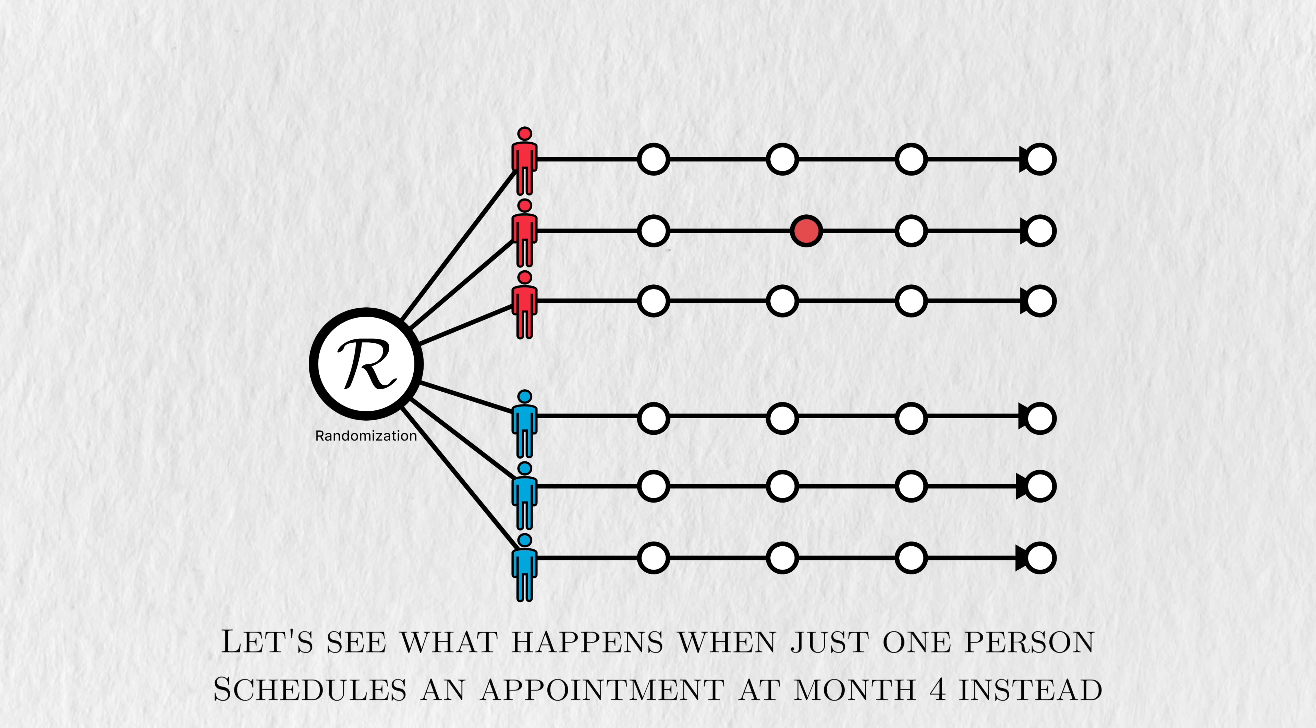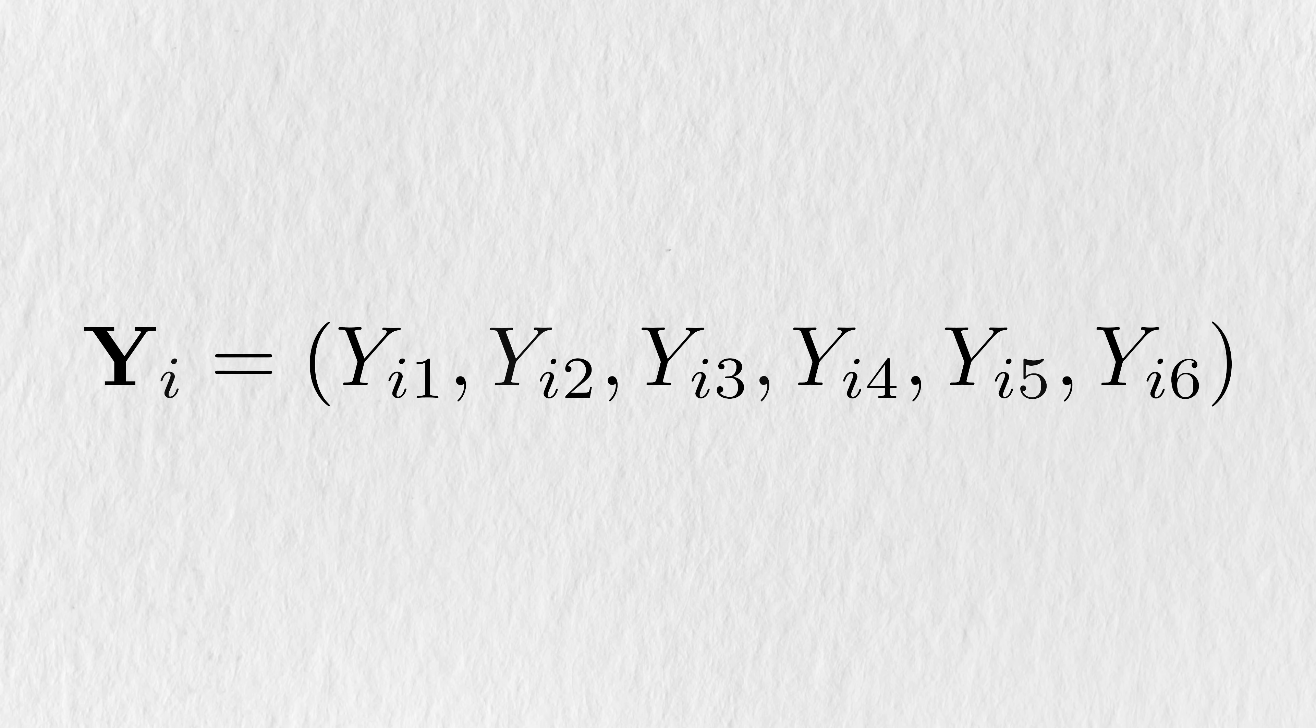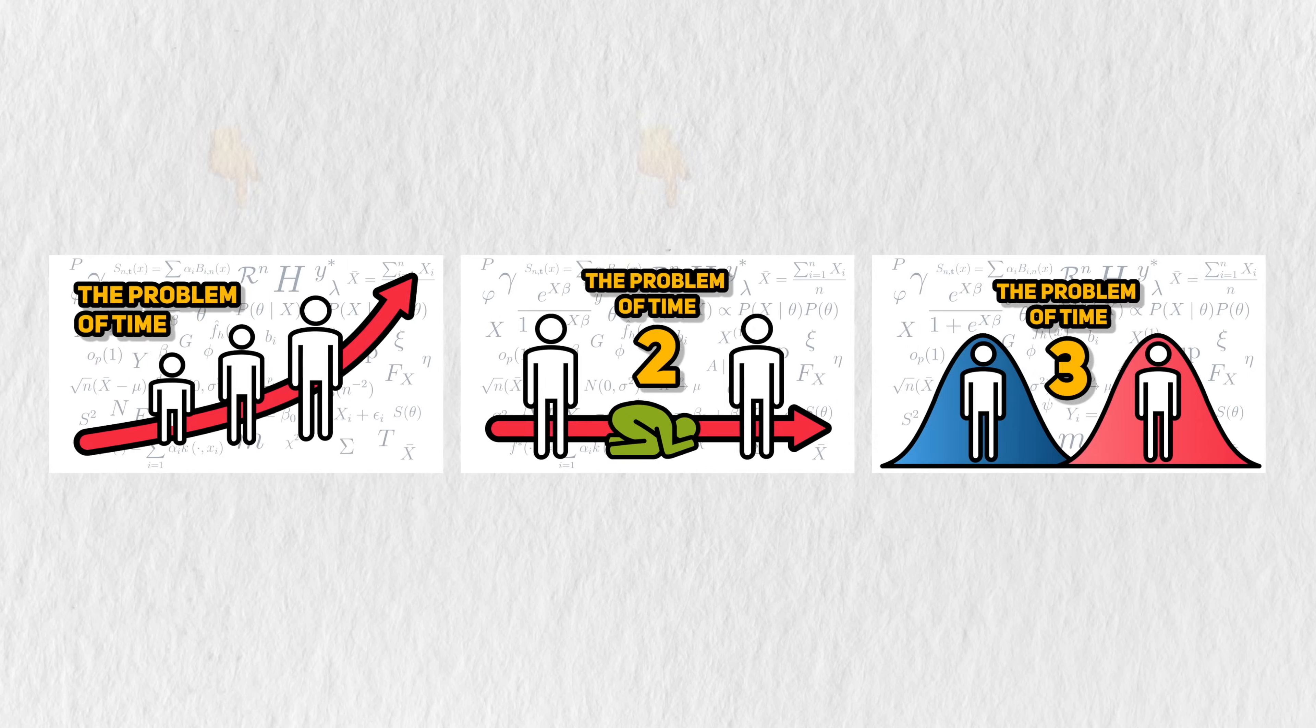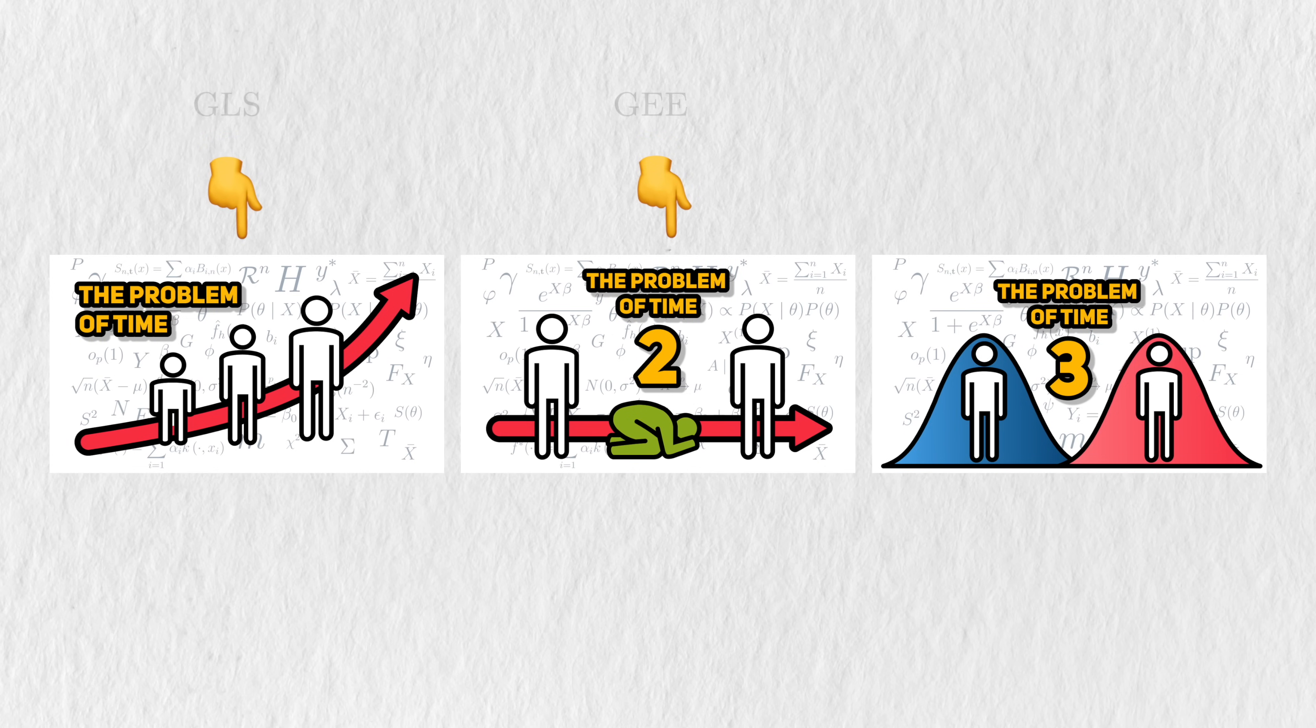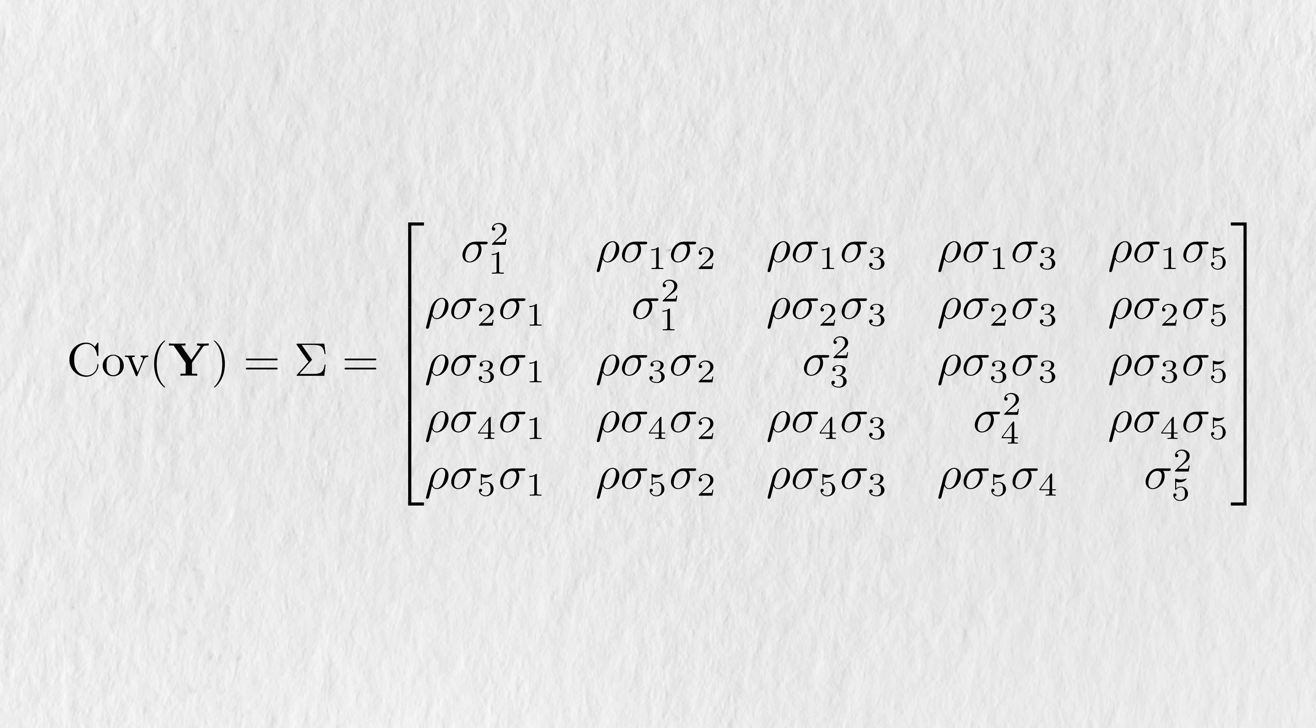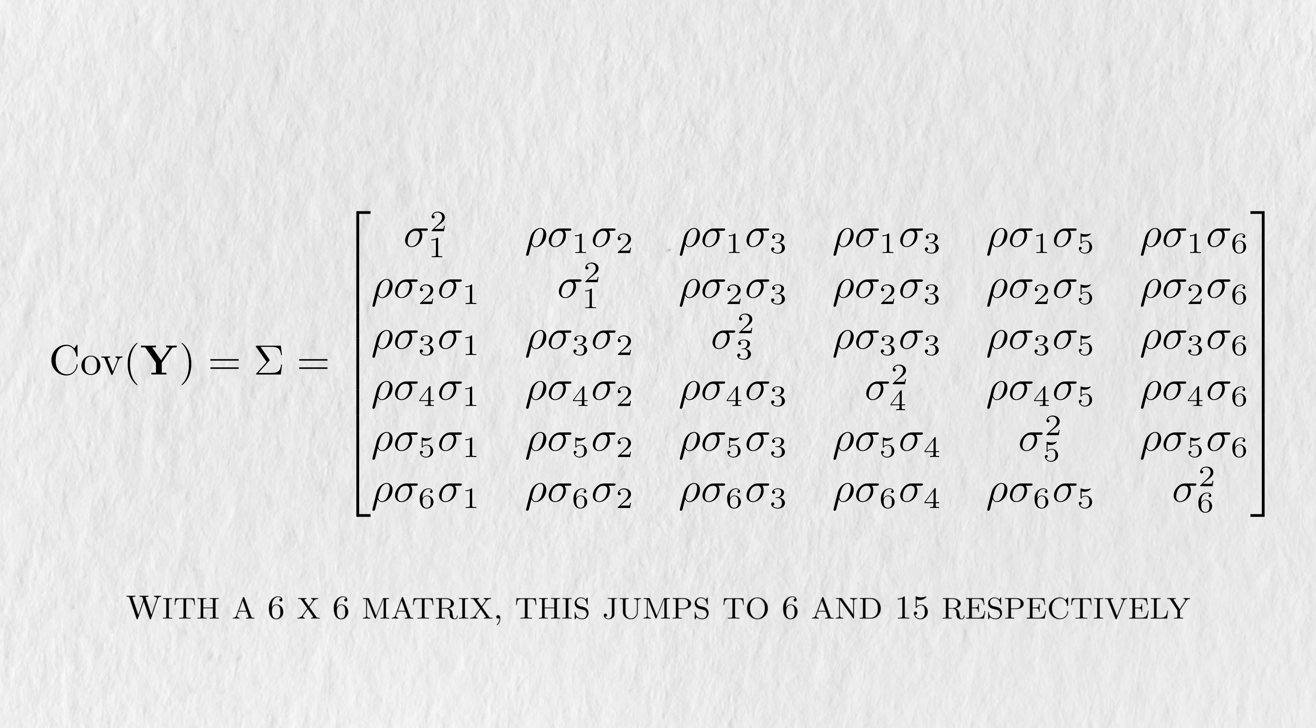Let's see what happens when just one person schedules their appointment at month four instead of month three. The correlation matrix has to account for all the time points that we have. So instead of five, we have a total of six time points, which results in a six by six correlation matrix. And there's a bevy of problems that come with this. The models from the first two videos in this series, the GLS and the GEE, require us to estimate all the parameters in this matrix. In a five by five matrix, there are five variance parameters in the diagonals and ten correlation parameters to estimate. And this jumps to six and fifteen respectively when we consider a six by six matrix.